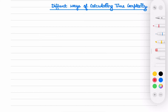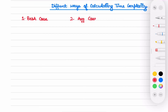Hi everyone, welcome back to our new video where we will discuss different ways of calculating time complexity. In our previous video we already defined time complexity and its formula, and we concluded that there are three ways of calculating or representing time complexity. So what are they? The first way is best case, second is average case, and third is worst case. Let's understand the meaning of each.